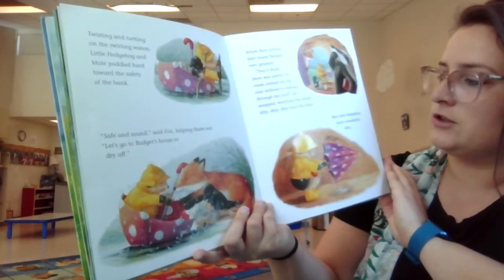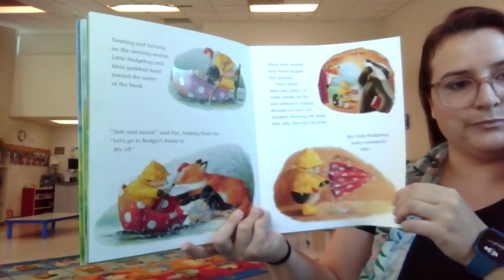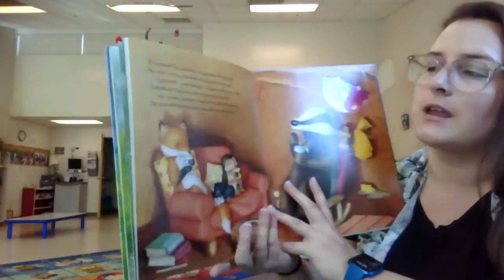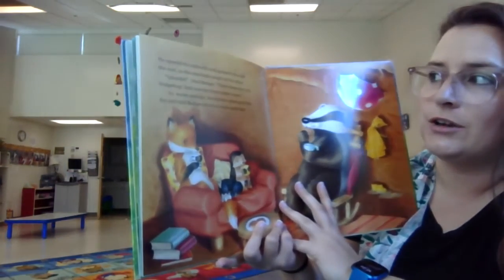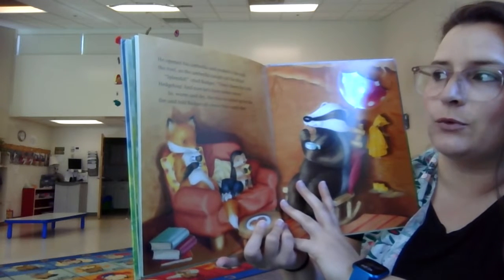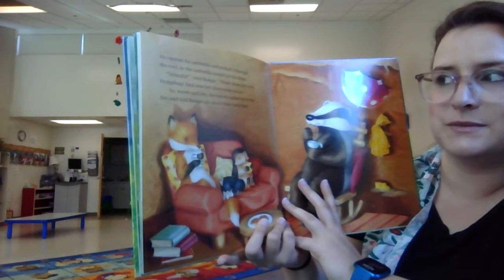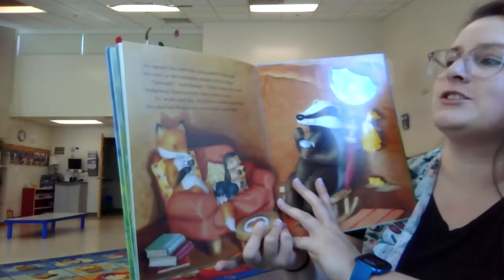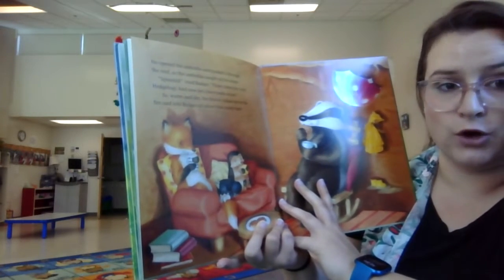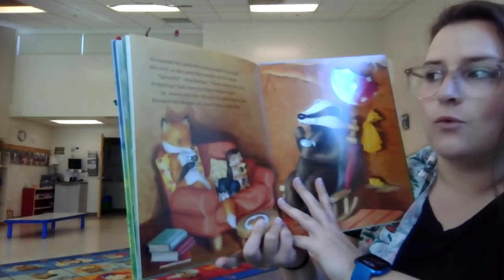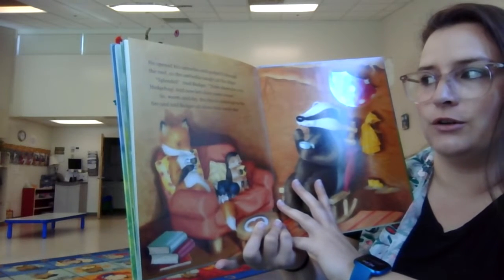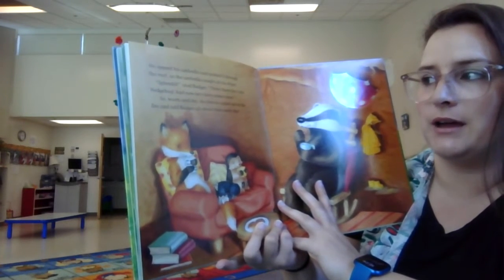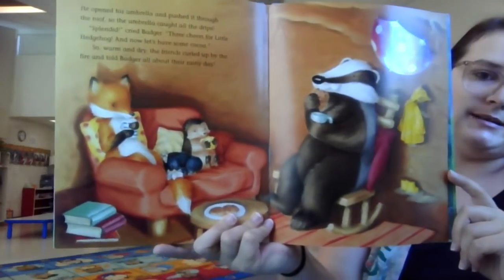But little hedgehog had a wonderful idea. He opened his umbrella and pushed it through the roof so the umbrella caught all the drips. Splendid, cried Badger. Three cheers for little hedgehog. Now, let's have some cocoa. So, warm and dry, the friends curled up by the fire and told Badger all about their rainy day.